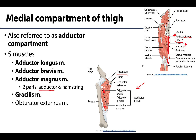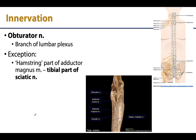The obturator externus is also usually included with the medial compartment, but as its actions don't totally align with this compartment, we are going to mention it here and move on - that is why it is not bolded.